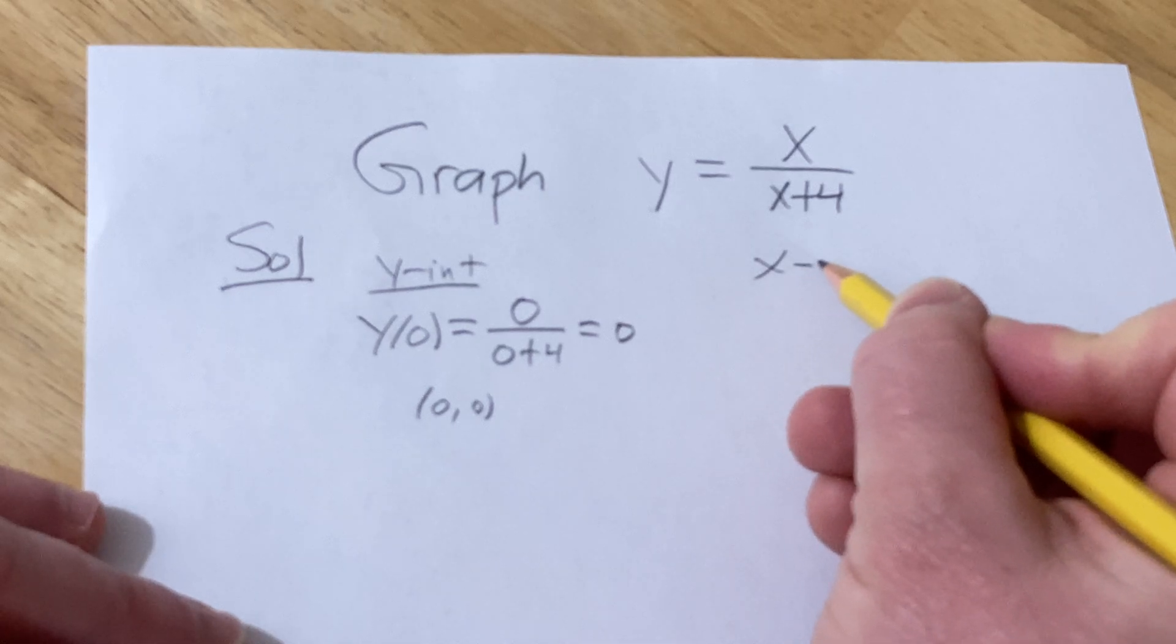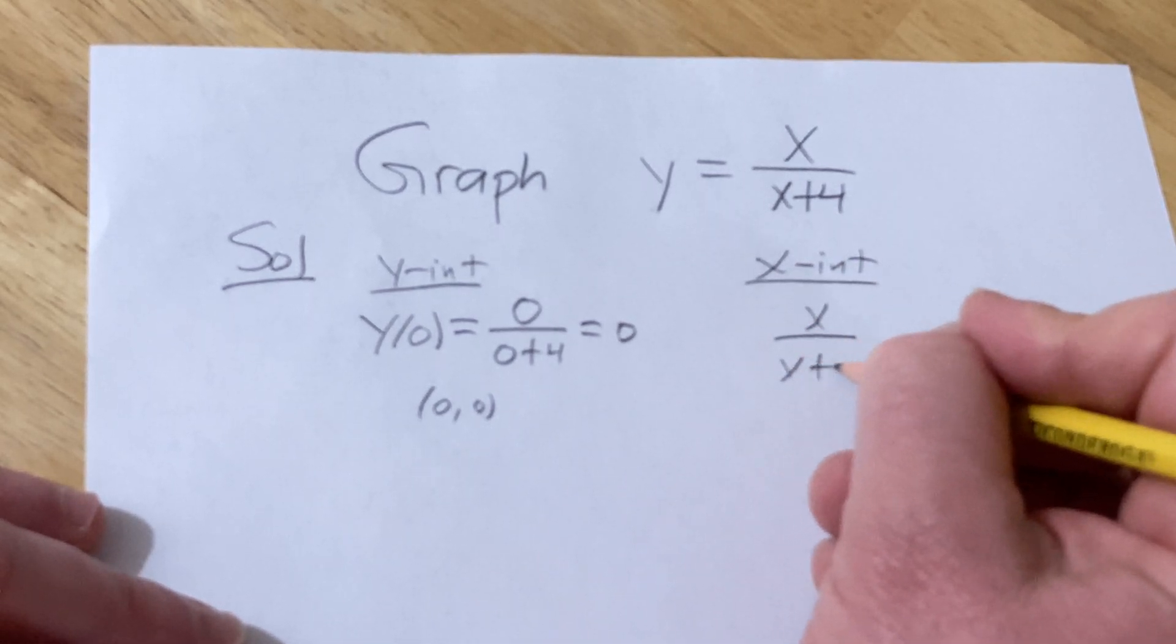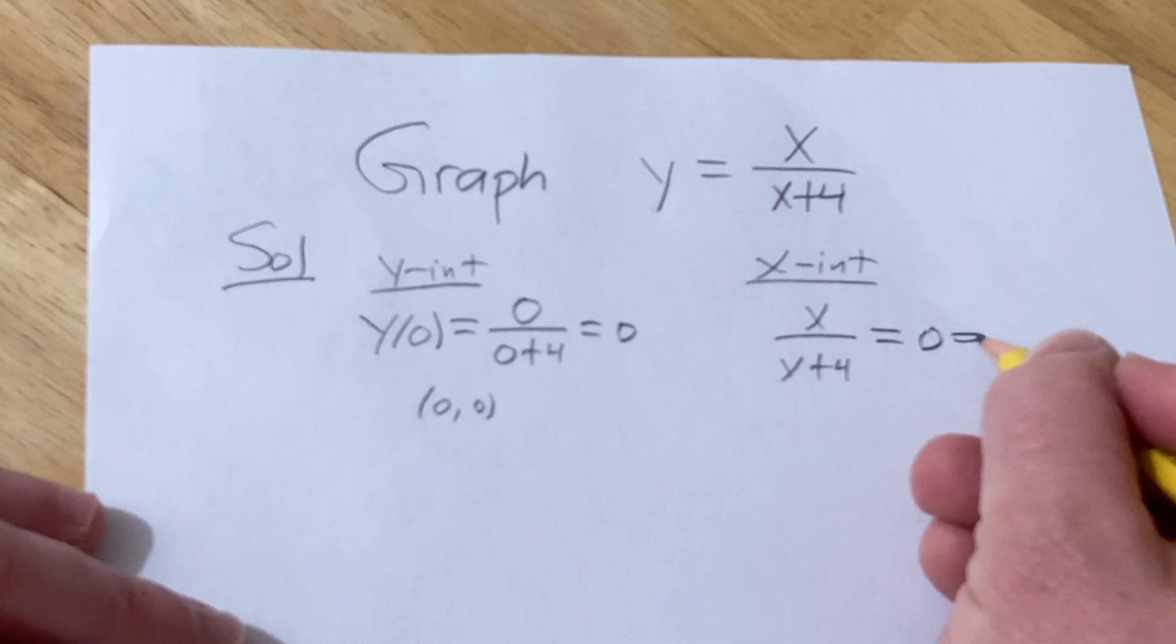To find the x-intercept, you take the entire thing and set it equal to 0. When you have a fraction equal to 0, the numerator is 0. So you get the same thing. All right, so no difference there.